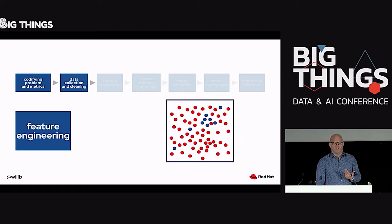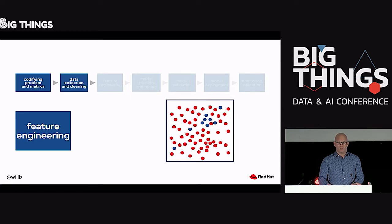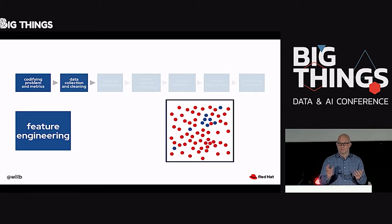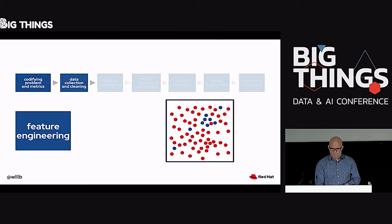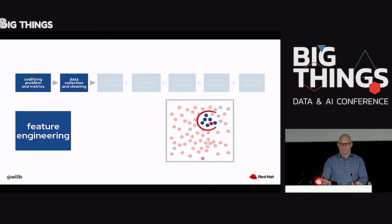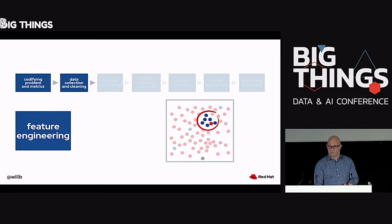The next thing I'm going to do is engage in a process called feature engineering. This is basically trying to expose some structure in the data by mapping data to points in space. If I have a message, I want to put it at a point in space so that similar messages are at similar points in space. Ideally, the way I do that mapping should expose something interesting about the data. I can see that if I look at some part of space, I have a bunch of legitimate messages clustered together, which indicates this is a problem I could solve with machine learning.